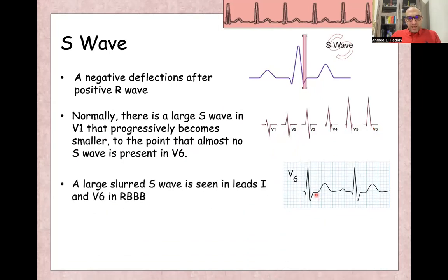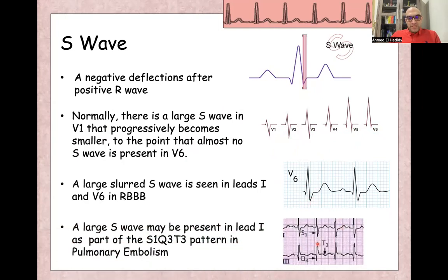You can see large S wave in V6 or lead one in right bundle branch block, and also you can see large S wave in lead one as part of S1, Q3, T3 as a criteria for pulmonary embolism.